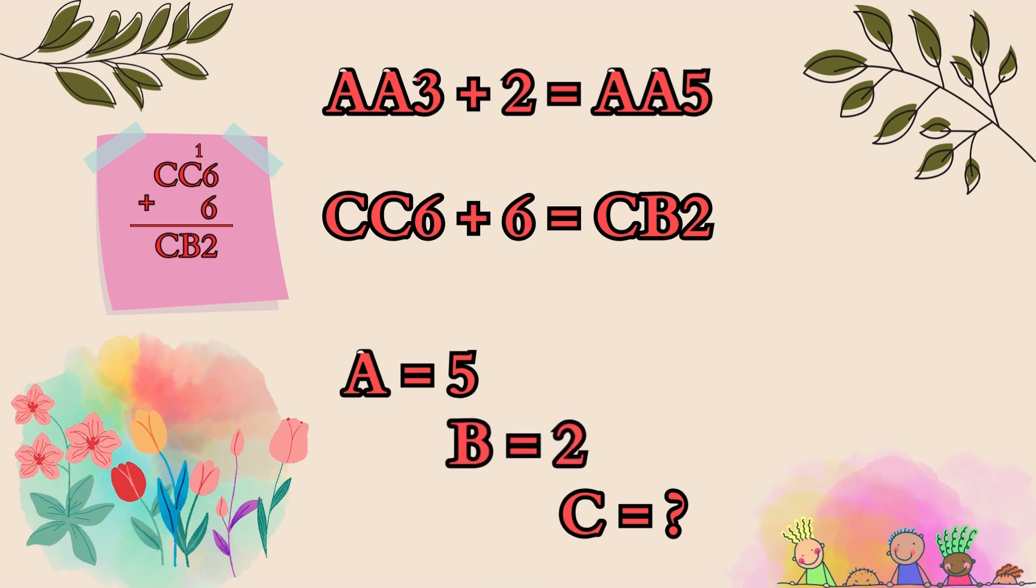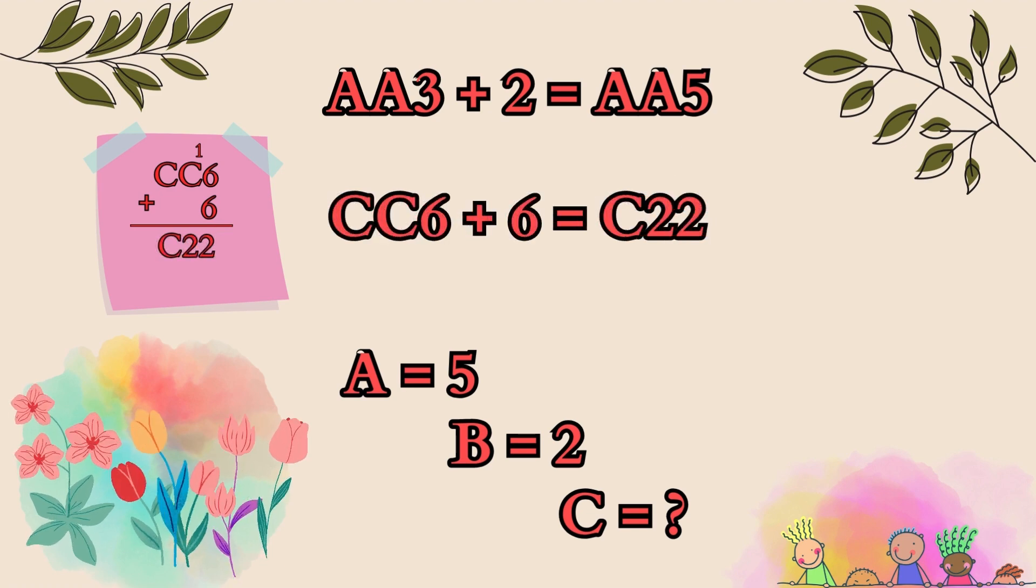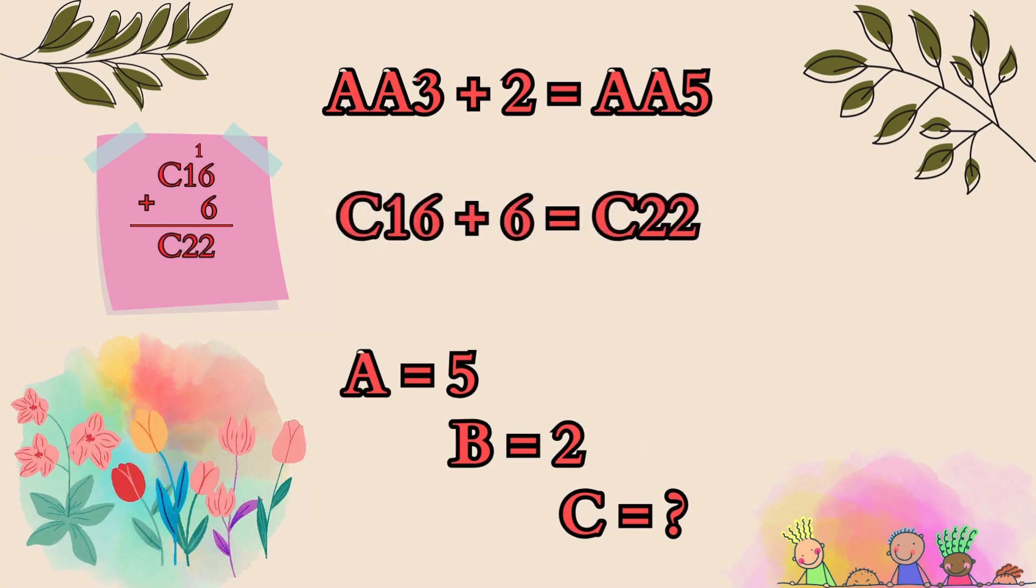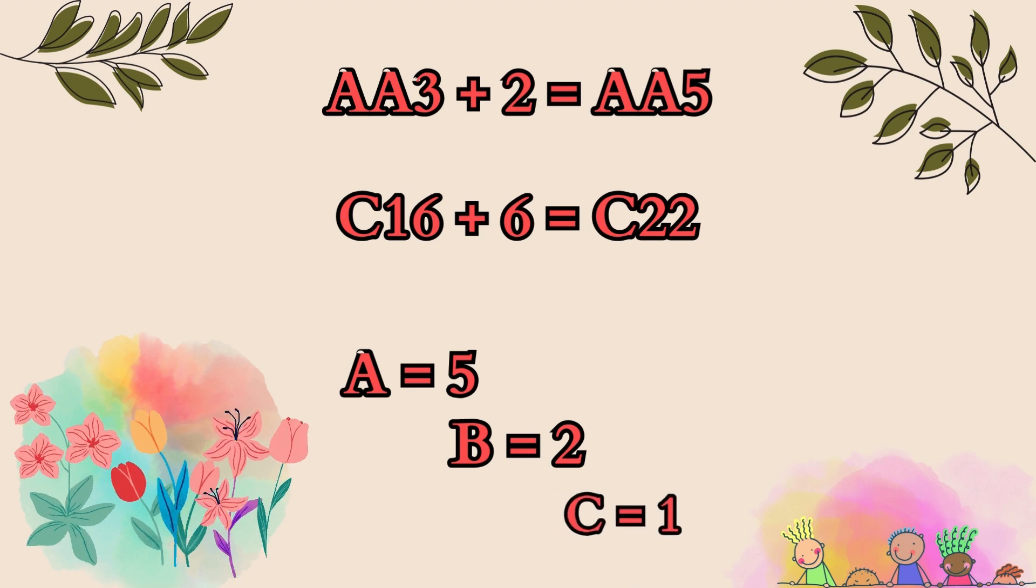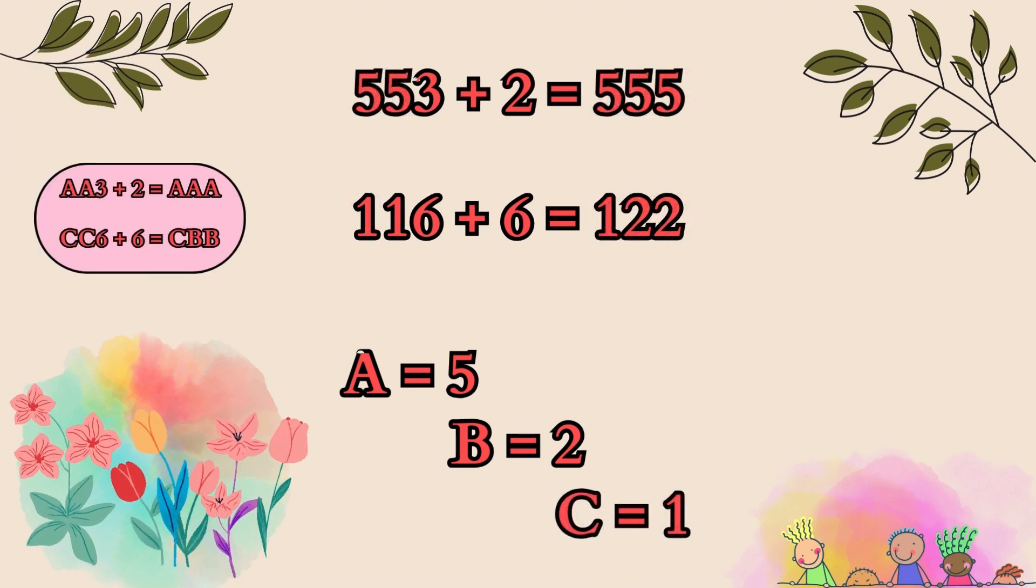To solve for c, we know that c plus zero plus one that was carried over from the twelve equals two. Well that means that c must be equal to one. Here's the original question and if you plug our numbers in you'll see that it all works out perfectly.